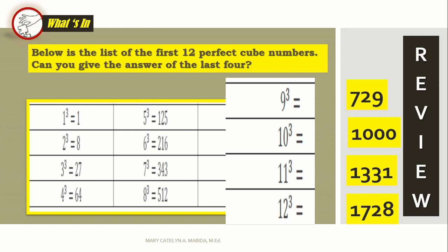Let us familiarize ourselves with these perfect cubes. Again, one cube is one, two cube is eight, three cube is twenty-seven, four cube is sixty-four, five cube is one hundred twenty-five, six cube is two hundred sixteen, seven cube is three hundred forty-three, eight cube is five hundred twelve, nine cube is seven hundred twenty-nine, ten cube is one thousand, eleven cube is one thousand three hundred thirty-one, twelve cube is one thousand seven hundred twenty-eight.